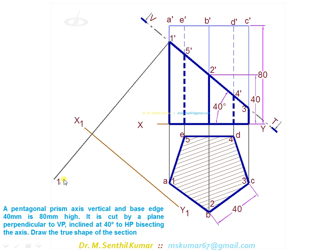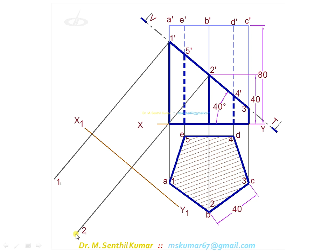Again to repeat: the distance of 1-1 from x1-y1 equals the height of point 1 from XY in the top view. For marking point number 2, get the height of point 2 from XY in the top view, set the compass to this distance, then through 2-dash draw a projector perpendicular to x1-y1, and mark point 2-1 at that distance from x1-y1. The distance of 2-1 from x1-y1 equals the distance of point 2 from XY in the top view. Follow the same procedure for all other points.